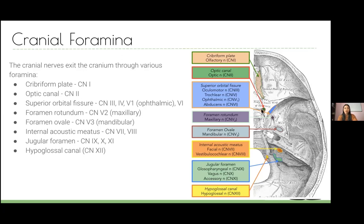The second cranial nerve, the optic nerve, goes through the optic canal into the orbit where the eyeball is. The superior orbital fissure also opens into the orbit and carries quite a few nerves — think of it as carrying cranial nerves three, four, and six, plus the ophthalmic branch of five. All of these go to the eye: three, four, and six innervate the extraocular muscles, and V1 is the ophthalmic branch, so it makes sense they all go through the superior orbital fissure.